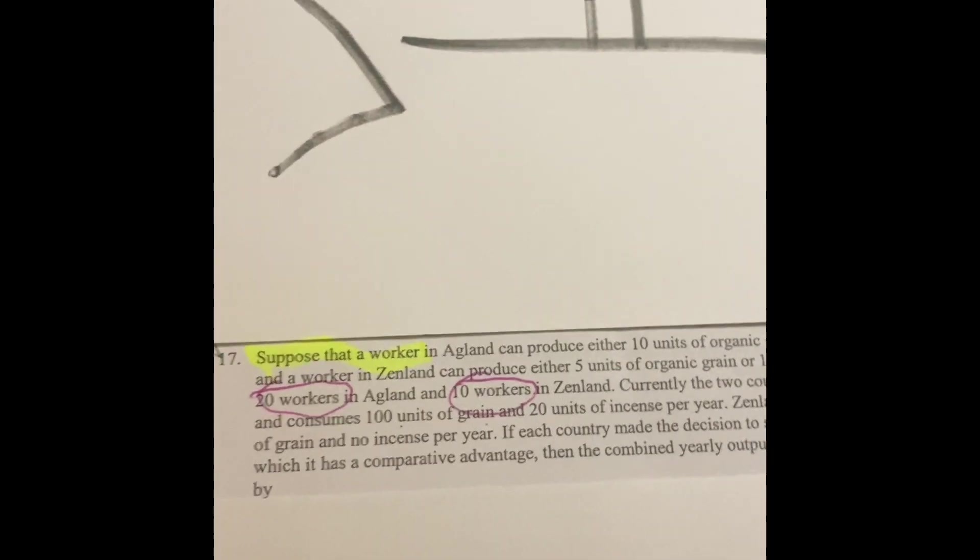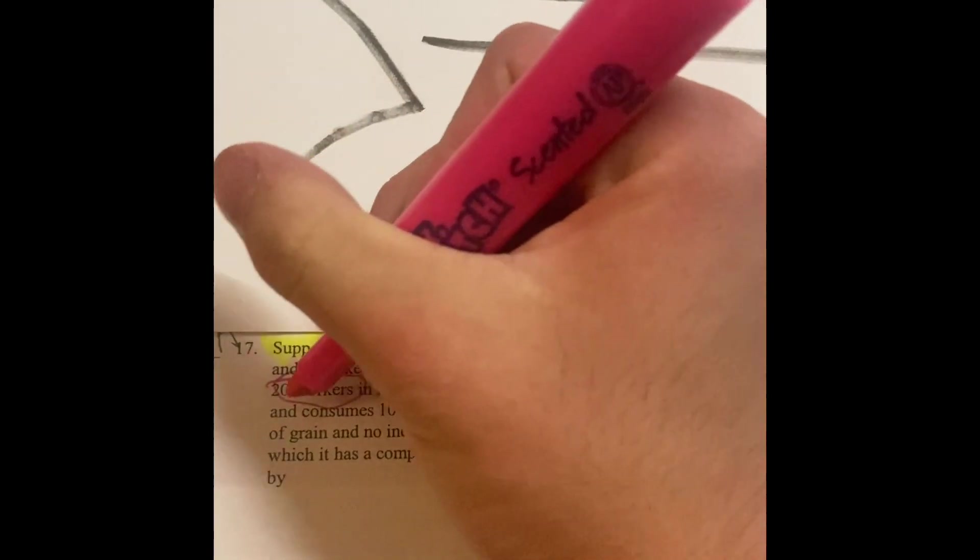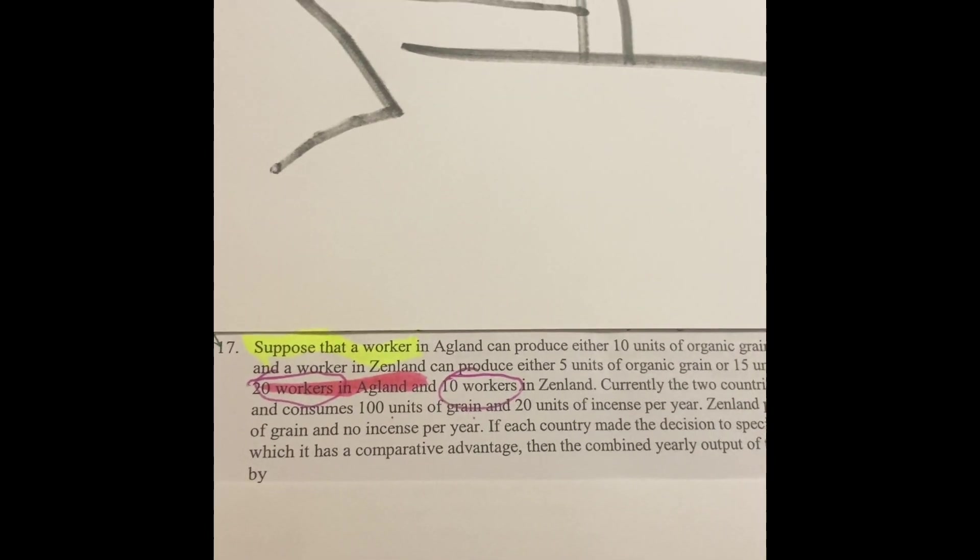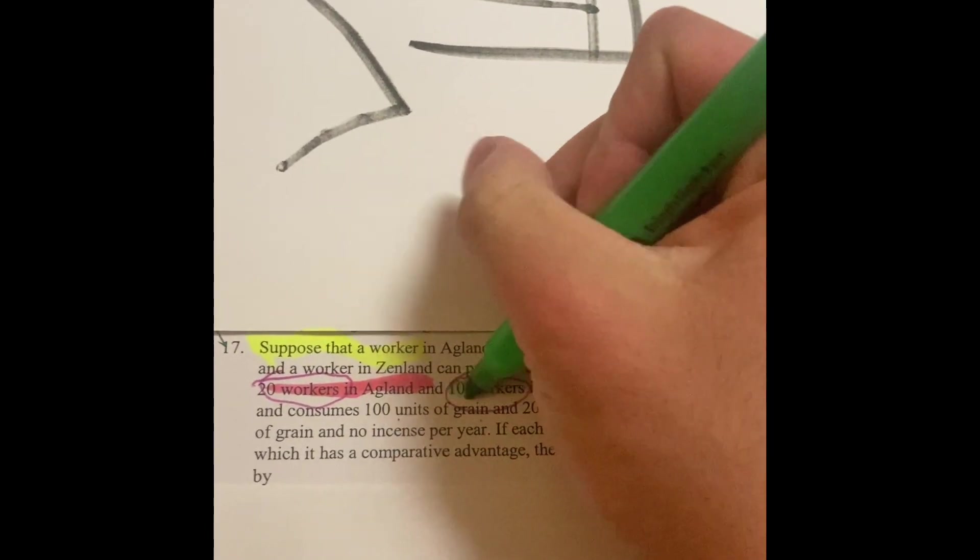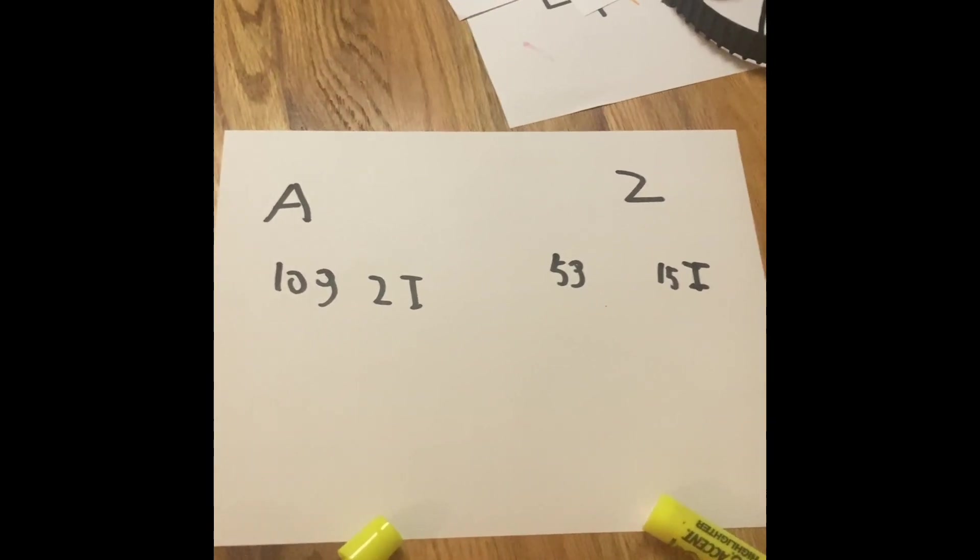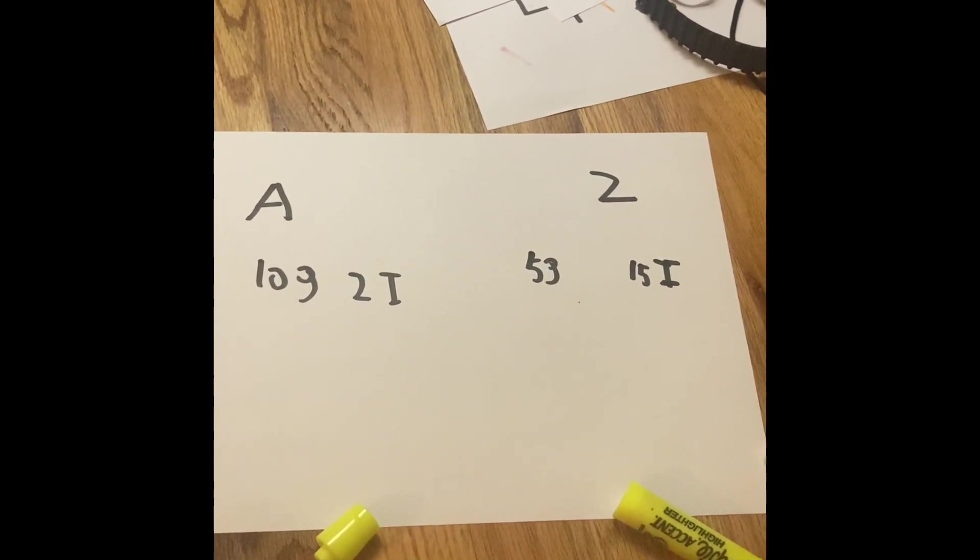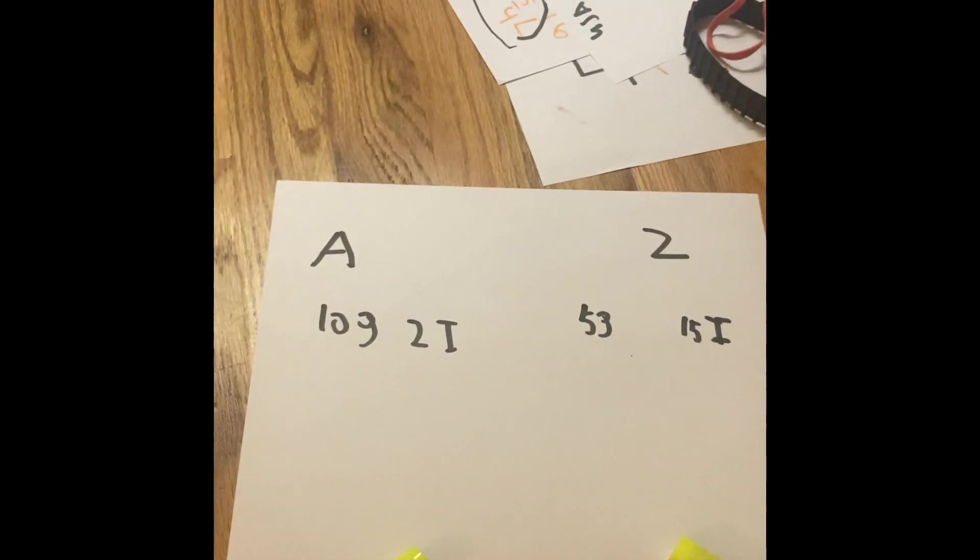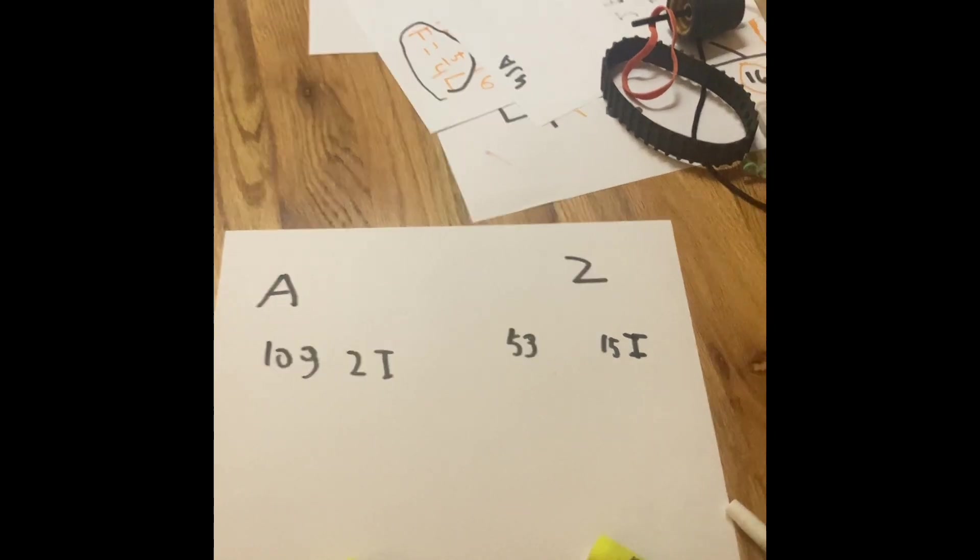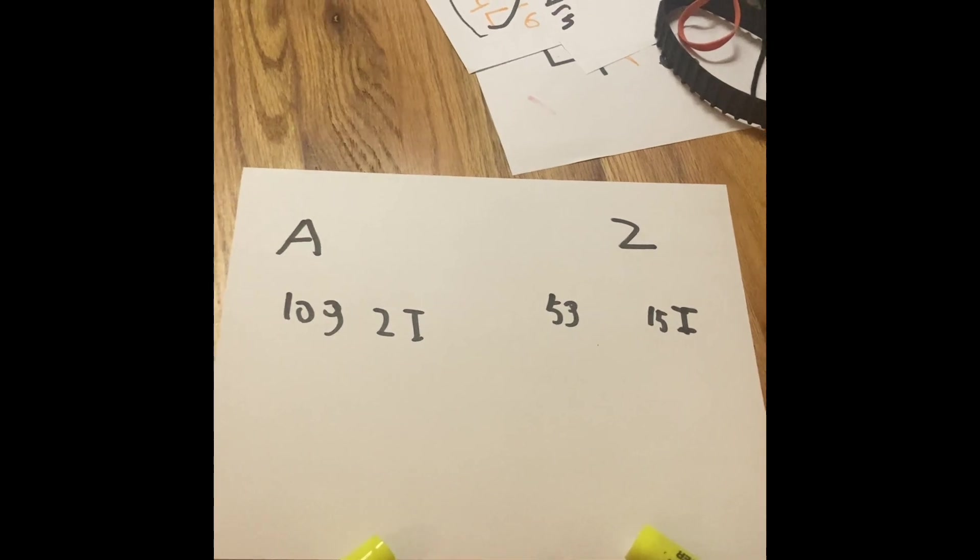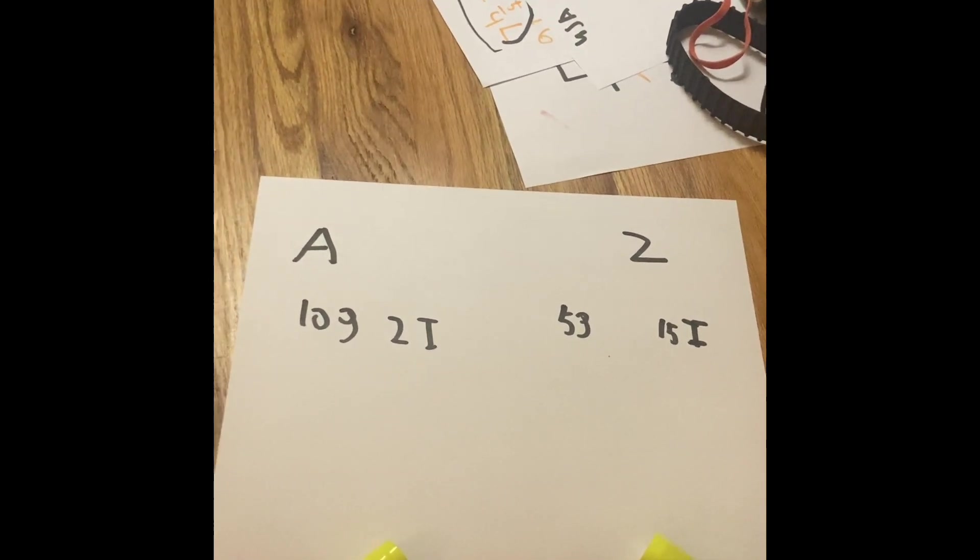Because it literally says on the problem, suppose a worker, and it also says that there are 20 workers in Agland and also there are 10 workers in Zenland. So if this is true for only one worker for each country, then we are going to have to multiply them by how many workers there are. So the more workers you have, the better thing you can do to produce the items and the resources you need, the faster and more efficient you can produce. So there is teamwork!